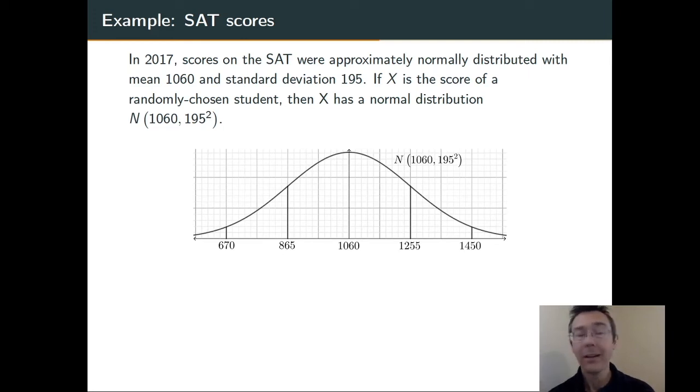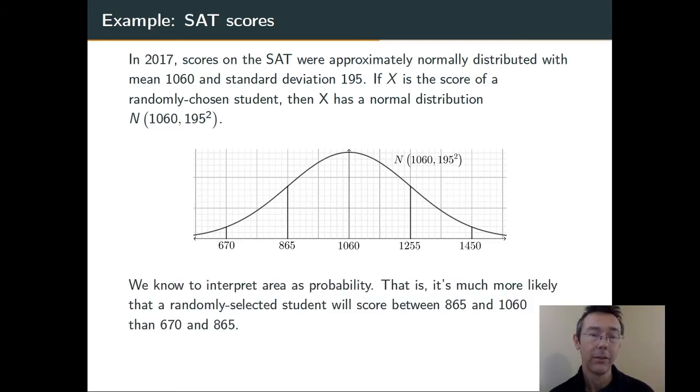So, here I'm drawing it. I'm labeling 1060, the mean, right in the middle. I'm going to the inflection point on the right and to the left, and I'm adding 195 to the mean and subtracting 195 from the mean. I've also gone ahead and drawn in a couple more values. I've gone an additional standard deviation above 1255 and another standard deviation below 670.